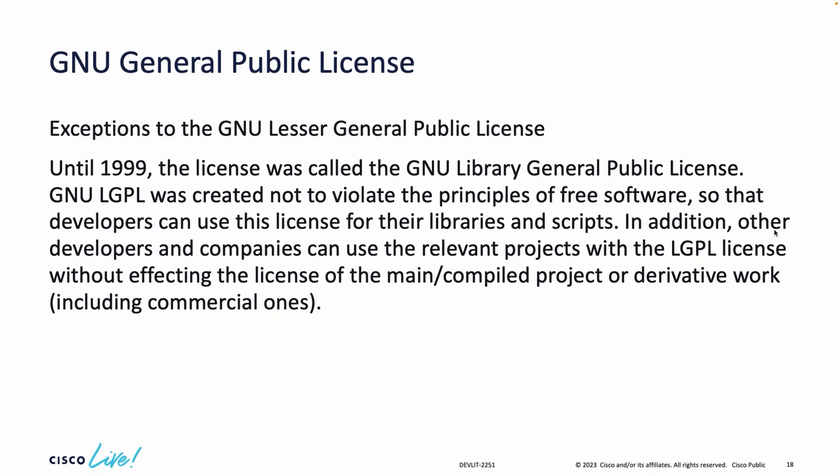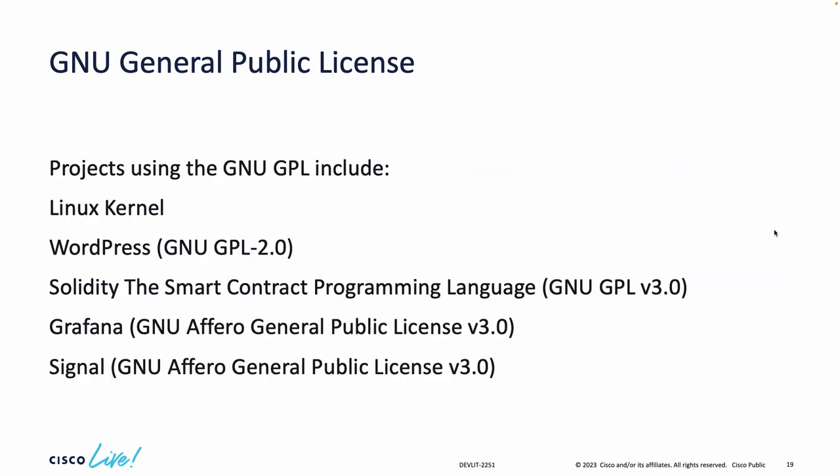Projects licensed under GNU GPL include: Linux kernel, WordPress, Solidity (the smart contract programming language), and Grafana (a visualization tool), which is licensed under GNU Affero General Public License. The Signal messenger is also licensed under GNU Affero General Public License.